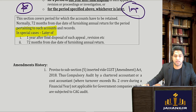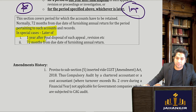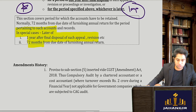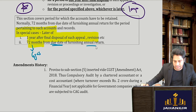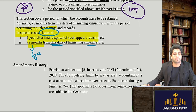The retention period is the later of two periods: one year after the disposal of such appeal, revision, etc., or 72 months — which simply means six years — from the due date of filing the annual returns, whichever is later.